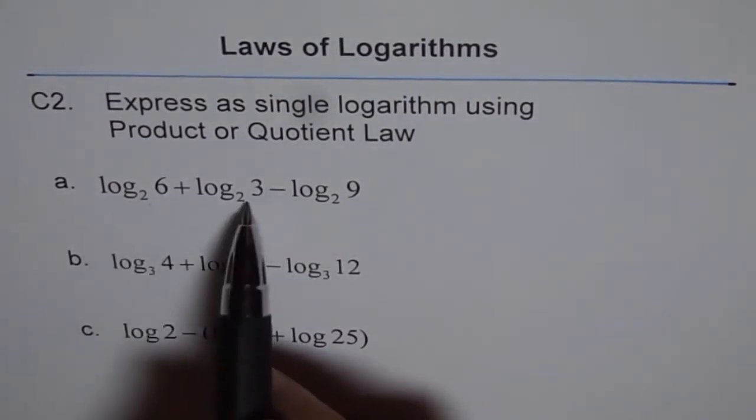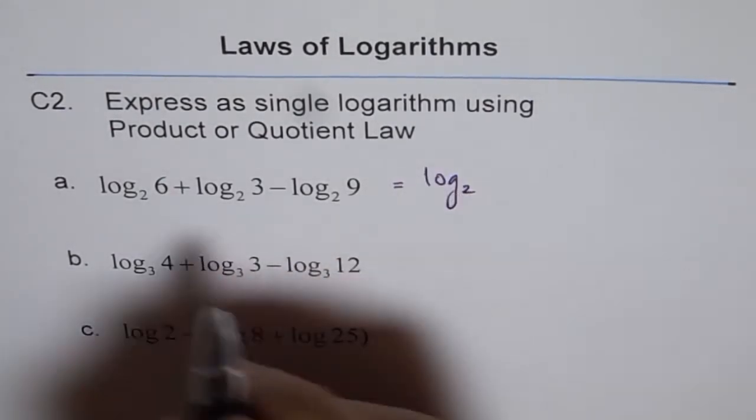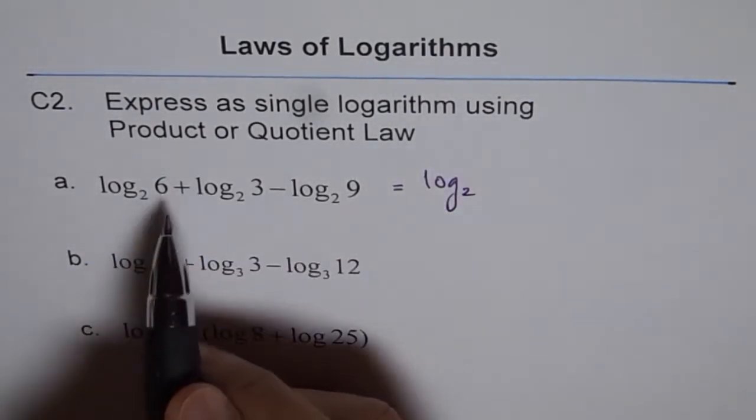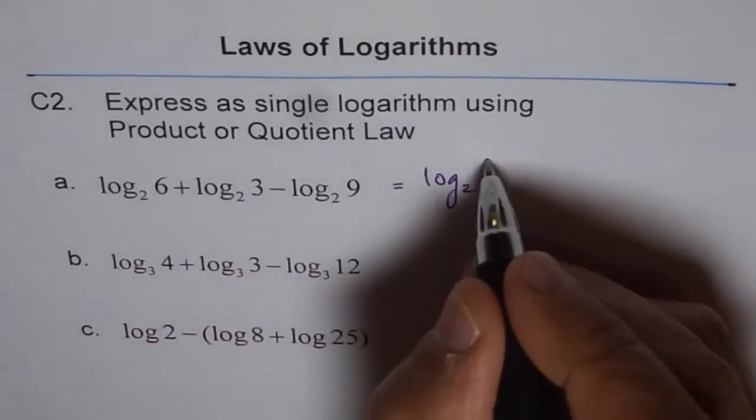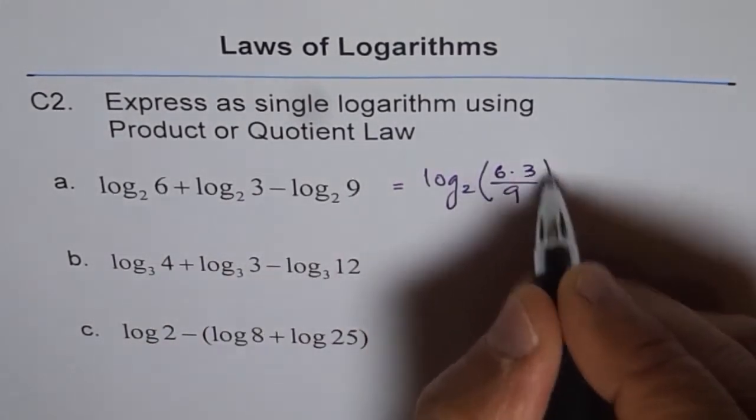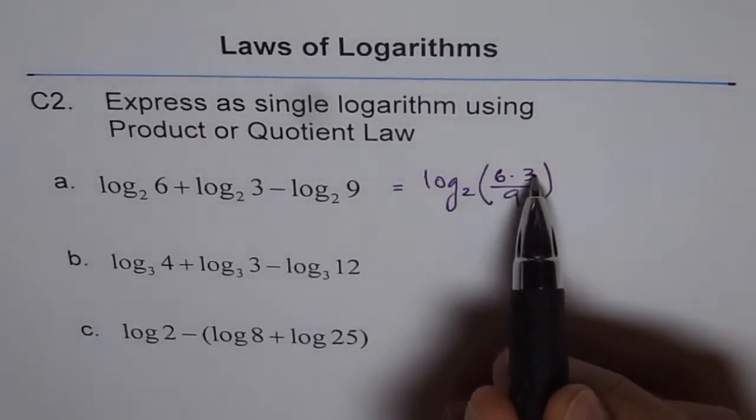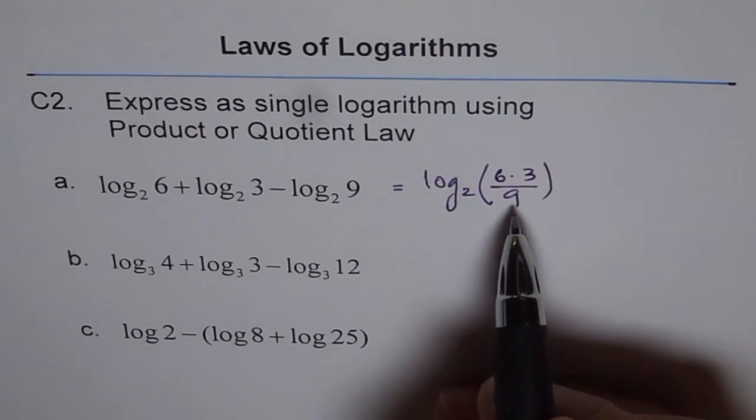So I will show you how it can be written. This could be written as log of 2 and all have the same base, so we will multiply 6 and 3. We will write 6 times 3 and we can divide by 9 since this is minus here. Now what do you get? 6 times 3 is 18 and 18 divided by 9 is 2.